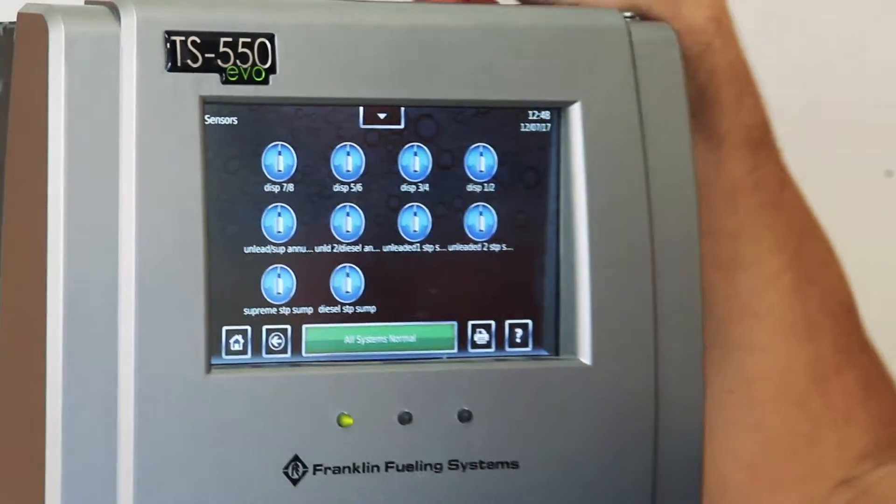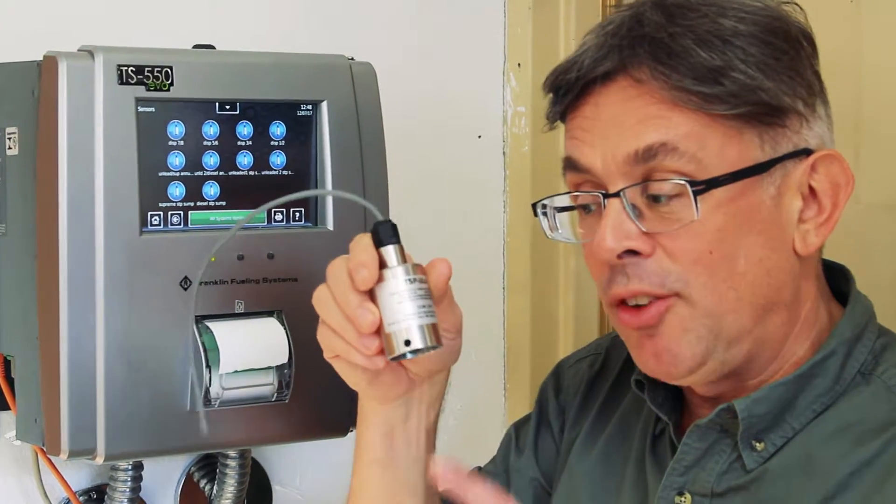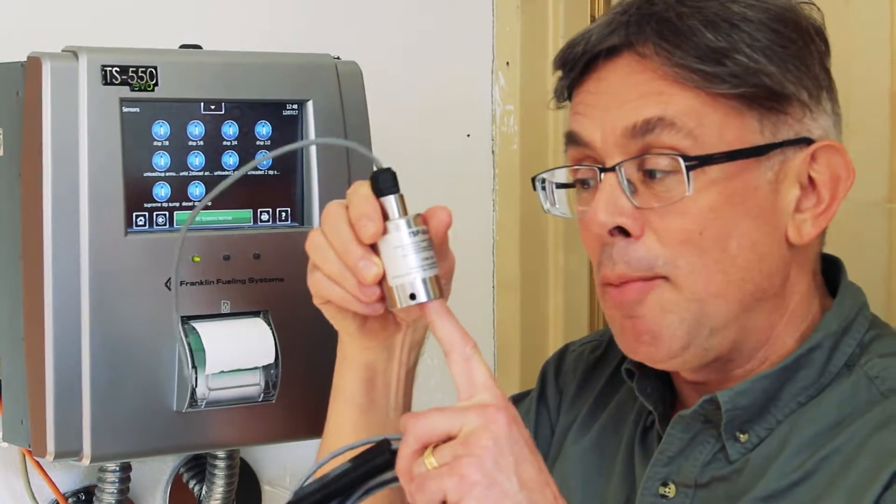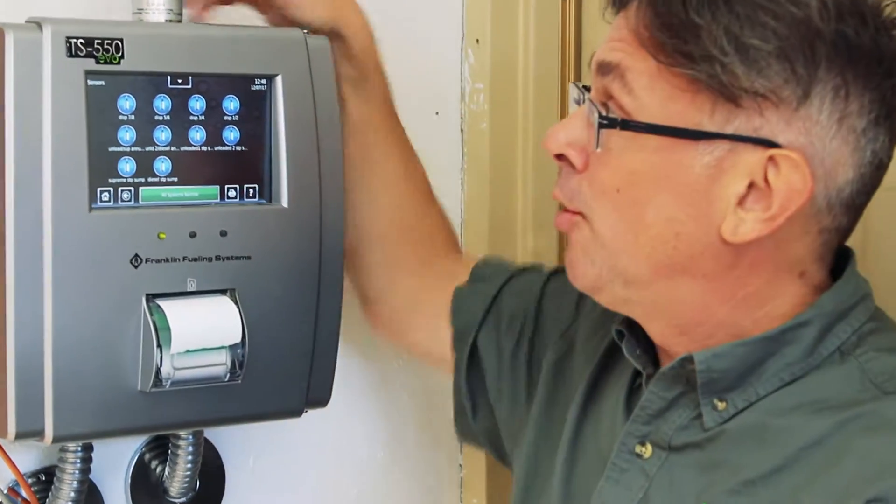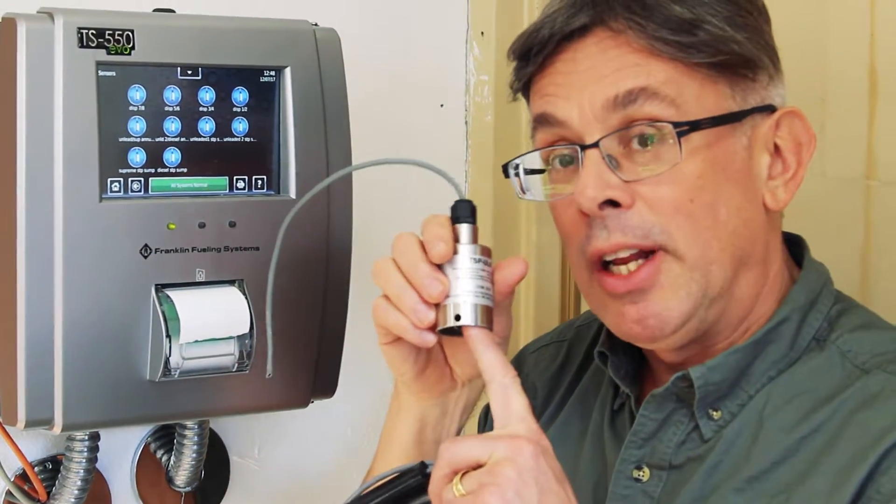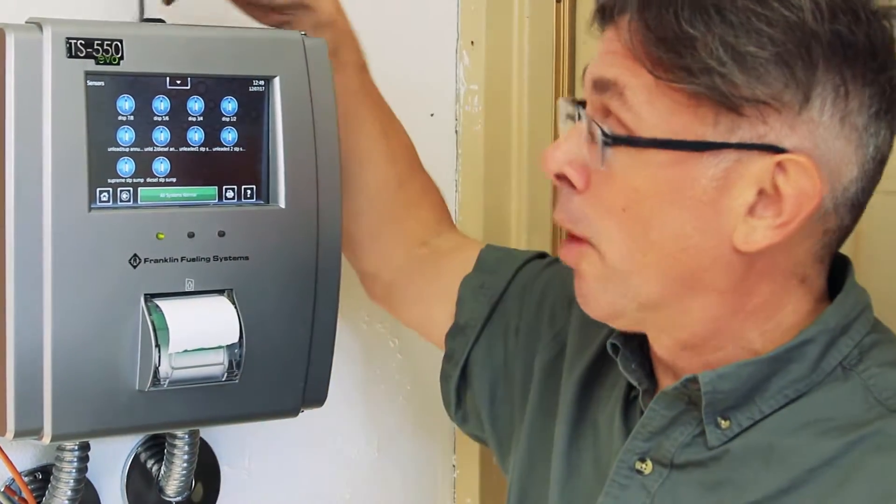There's a couple of different types of sensors out there. Some sensors are float sensors. They're activated by the rising of liquid inside a containment area, pushing up the float, sending a trigger to the alarm. This is what's called a non-discriminating sensor. This will tell you whether or not there's liquid in there, but it won't tell you if it's fuel or water.